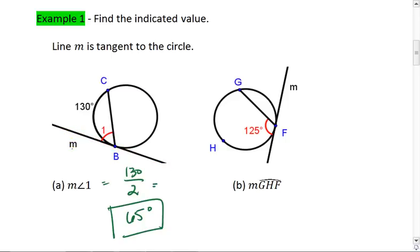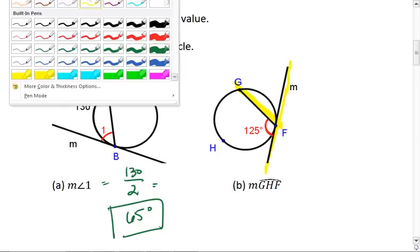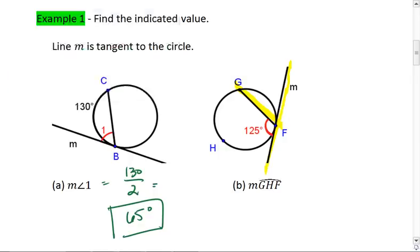For the second example, we again have a tangent line and a chord. The given angle, 125, is half of our intercepted arc.